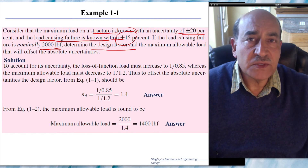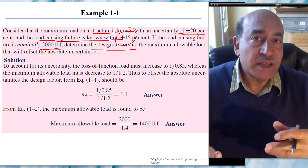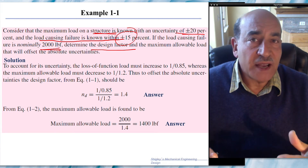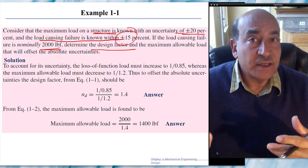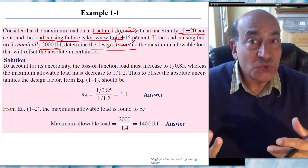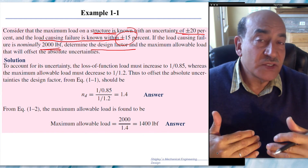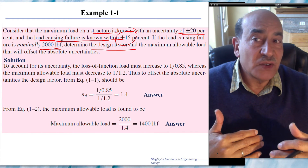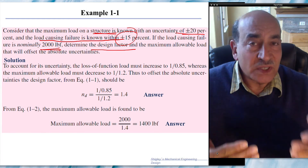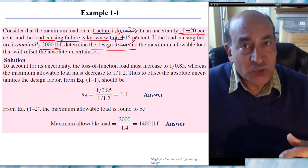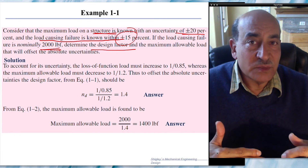We want to determine the design factor of safety and the maximum allowable load that will offset the absolute uncertainties. Since we don't know the maximum load to within plus or minus 20 percent, to be on the safe side we assume the maximum load is 1.2 times what it is. And since the failure load is known to plus or minus 15 percent, we assume the failure load is actually 85 percent of its nominal value.